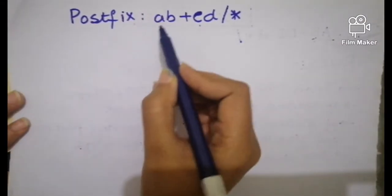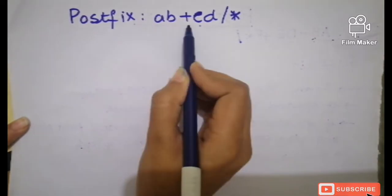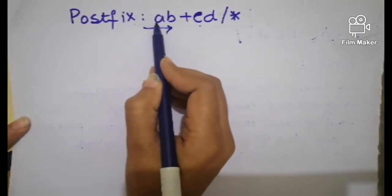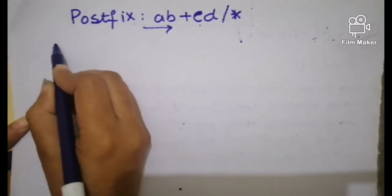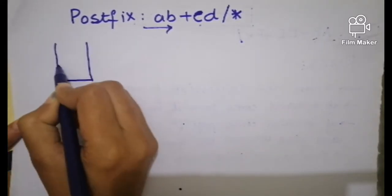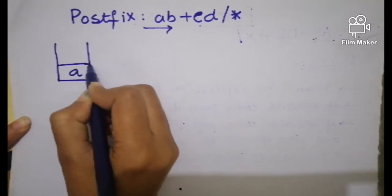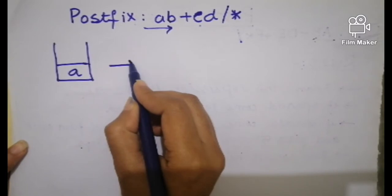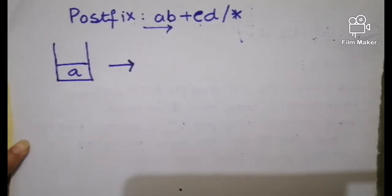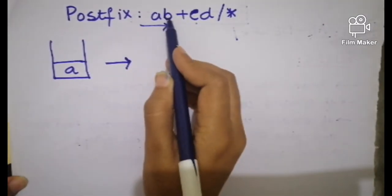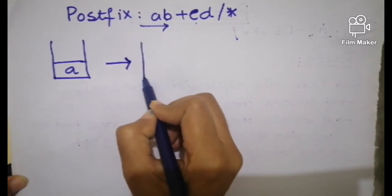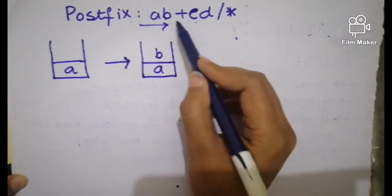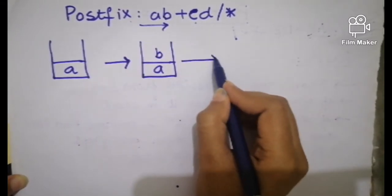Here is the expression. Scan the expression from left to right. The first one is an operand, so according to the rule, simply push it into the stack. The next one is also an operand, so push that operand into the stack as well. Now there is an operator, so we have to pop out the first two operands from the stack.